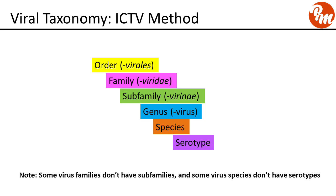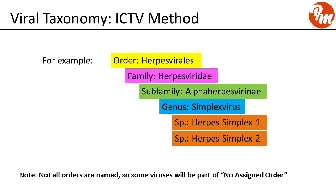Note that some virus families don't have subfamilies and some virus species don't have serotypes. For example, with herpes: the order is Herpesvirales, the family is Herpesviridae, the subfamily is Alphaherpesvirinae — among other subfamilies — the genus is Simplexvirus, and then under this genus there are two medically relevant species: Herpes simplex 1 and Herpes simplex 2. Other herpes viruses will fall under different subfamilies and genera.